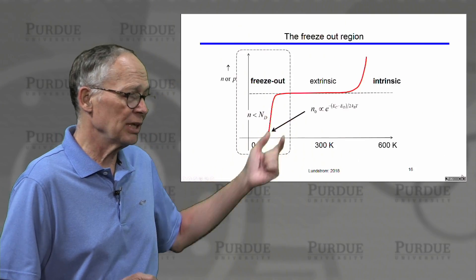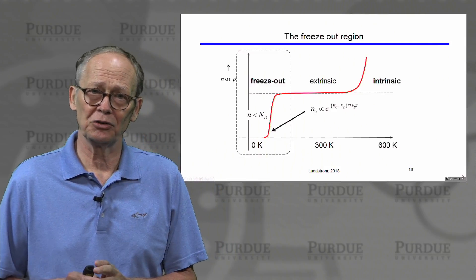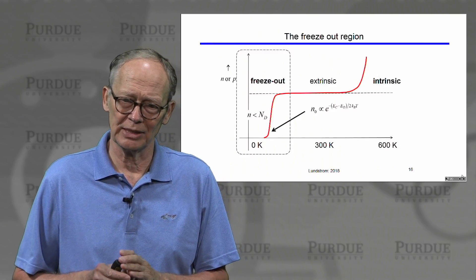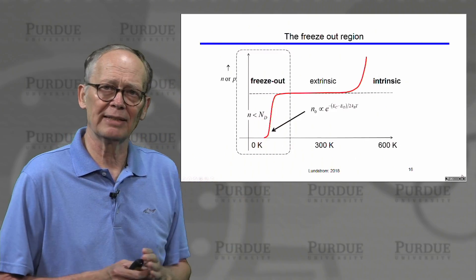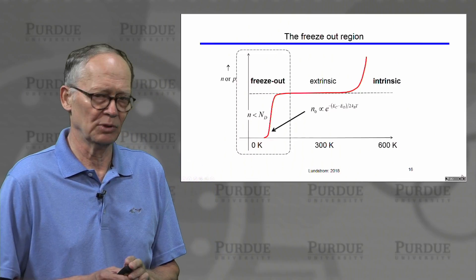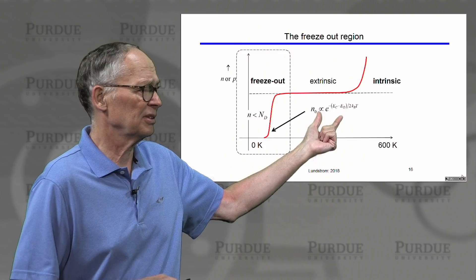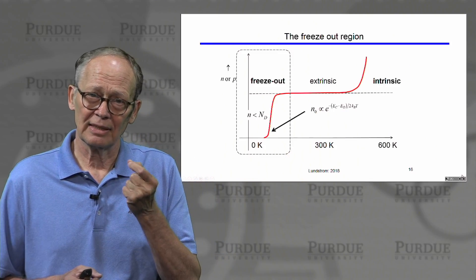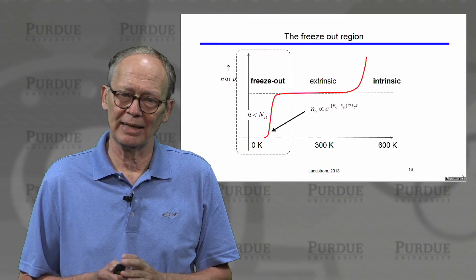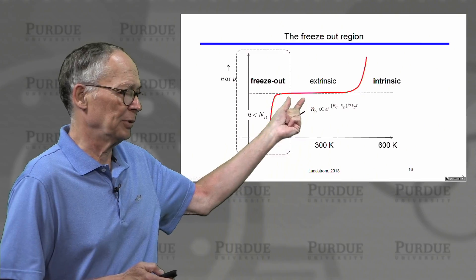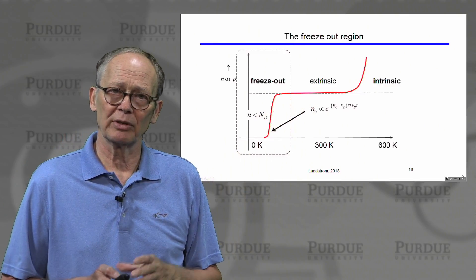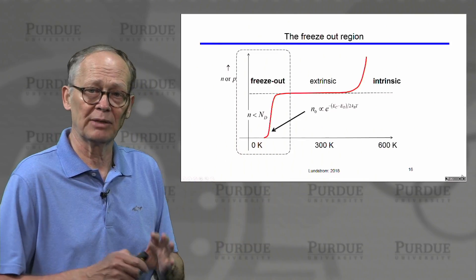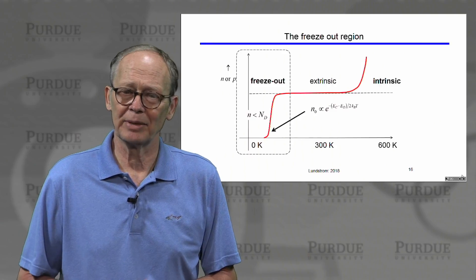In the low-temperature regime there are no intrinsic carriers to worry about, so we can eliminate that term from the quadratic equation. But at low temperatures the dopants might not be fully ionized — only some fraction of them are. At very low temperatures, that fraction is an exponential function of the energy level of the donor with respect to the band edge. As we go to lower and lower temperatures, we get fewer and fewer carriers from those donor atoms until eventually, at a low enough temperature, we have no carriers at all and the semiconductor becomes an insulator.